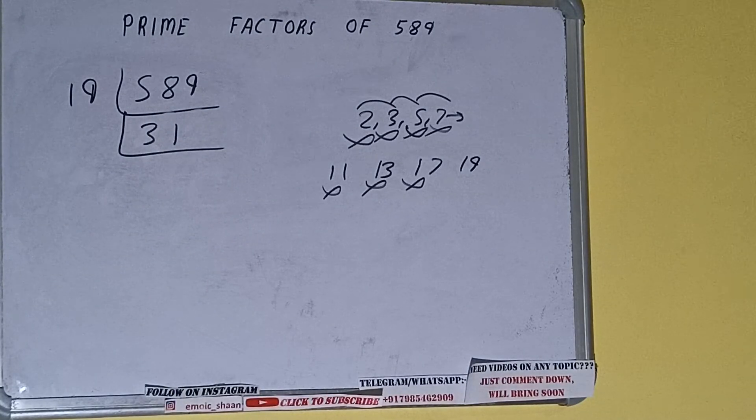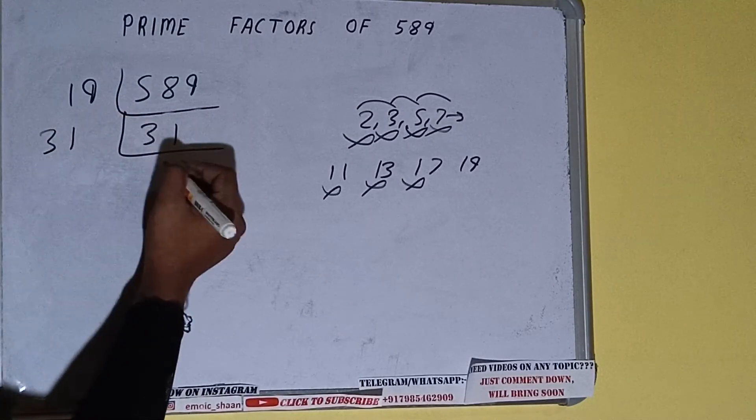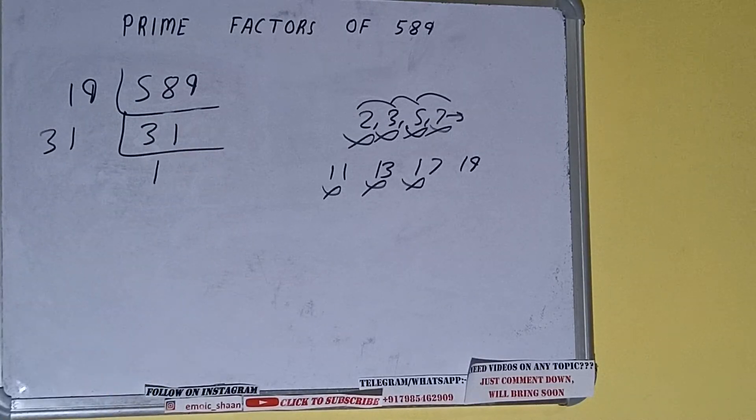So we'll be having 31, and 31 is further not divisible by 19. And also 31 is a prime number, so it is only divisible by itself, that is 31 and once. We do so we'll be getting 1. Once we get 1, we need to stop.